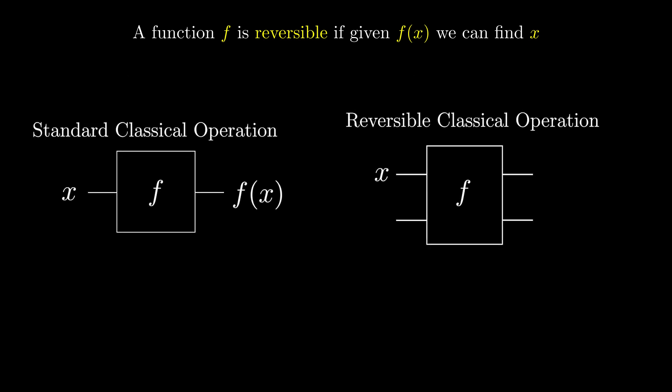To make any classical gate reversible, we must input another bit, let's call it c, and instead of only returning f, we return the input x, as well as c exclusive OR with f. This makes the operation reversible.